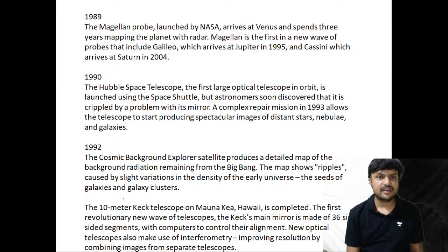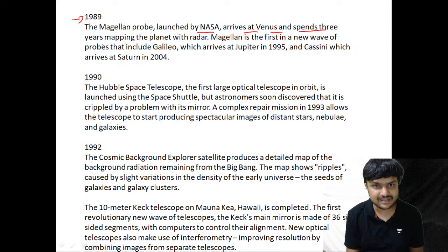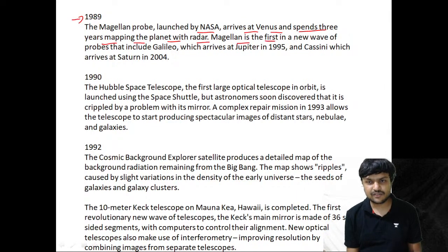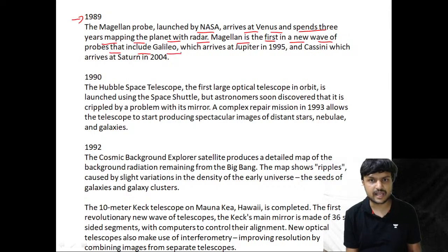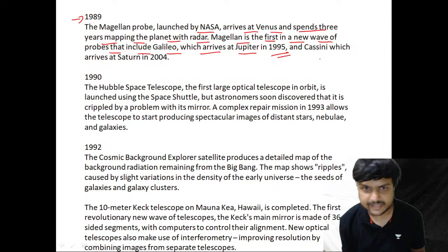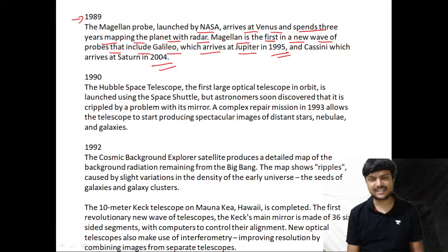In 1989, the Magellan probe launched by NASA arrives at Venus and spends three years mapping the planet with radar. Magellan is the first in a new wave of probes that include Galileo, which arrives at Jupiter in 1995, and Cassini, which arrives at Saturn in 2004.